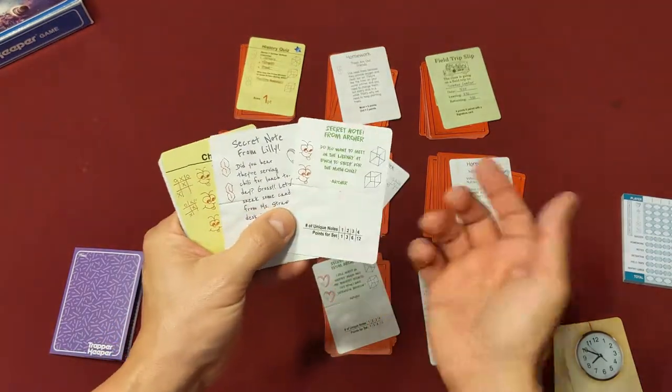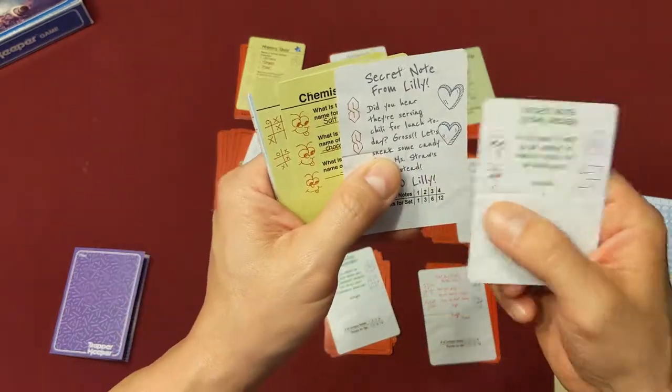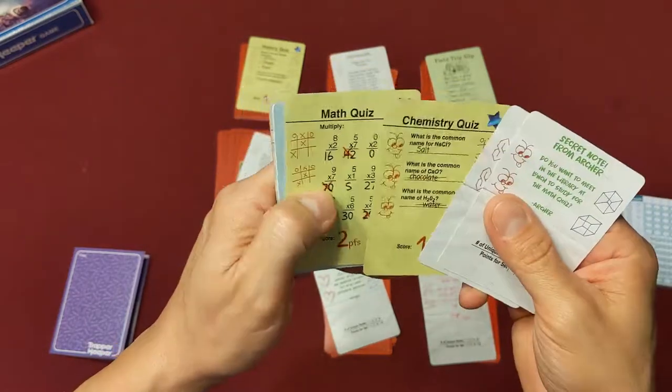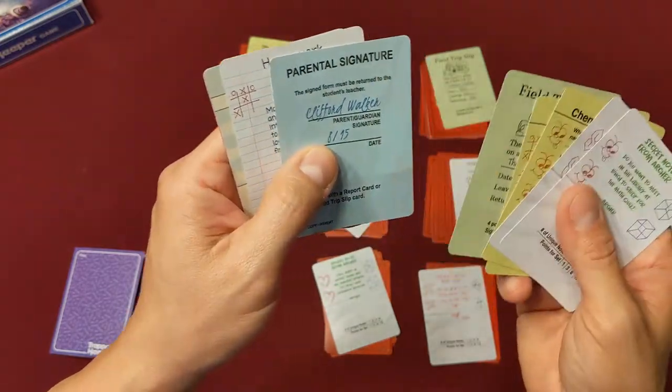So in this game there are different types of cards. There are secret note cards, like a note from Lily here and a note from Archer. There are quizzes like a chemistry quiz and a math quiz, and a few other ones. There's field trip cards and a parental signature card.